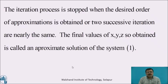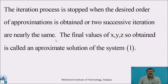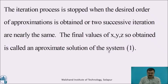The iteration process is stopped when the desired order of approximation is obtained, or two successive iterations are nearly the same. The final values of x, y, z so obtained are called an approximate solution of system 1.